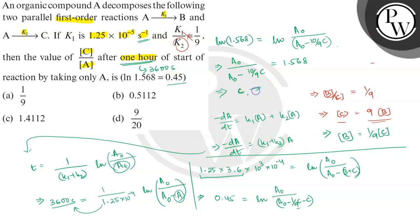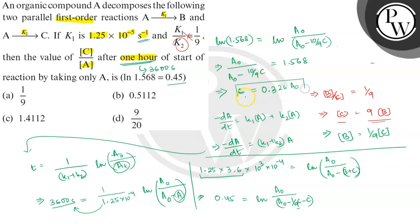Solving for c in terms of a0: from a0 / (a0 − 10/9·c) = 1.568, we calculate c = 0.326·a0. This is the value of c in terms of the initial concentration a0. The remaining concentration of A is a = a0 − 10/9·c.